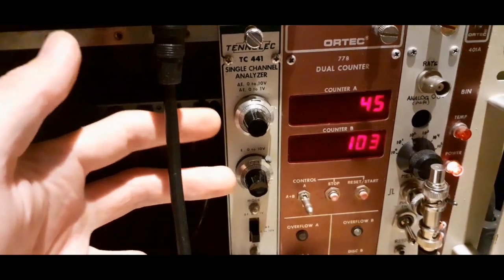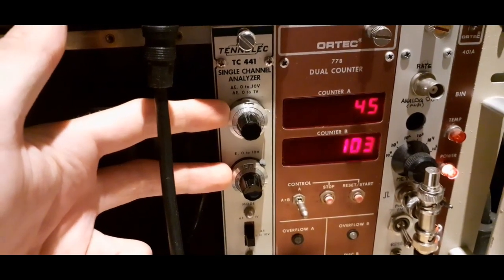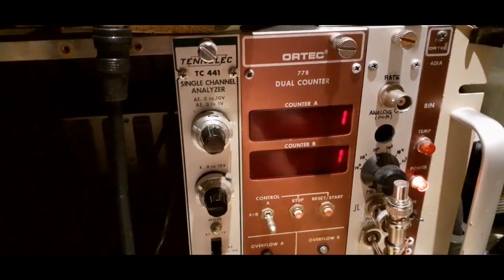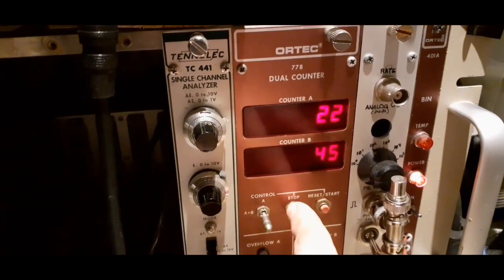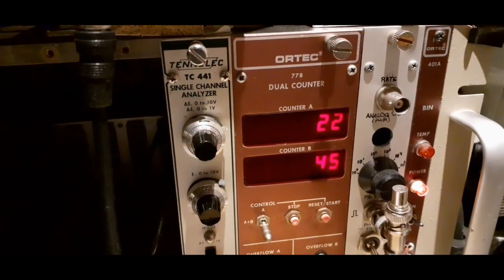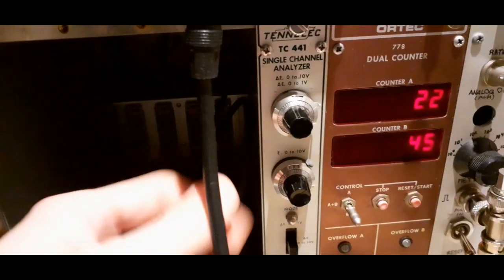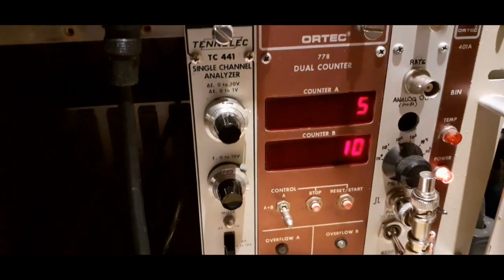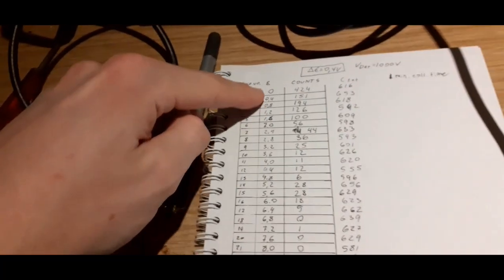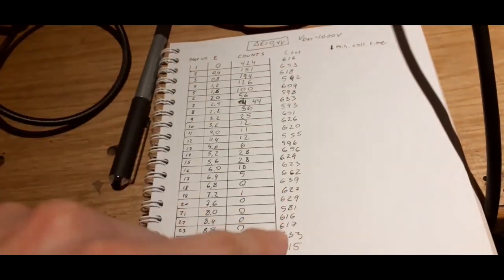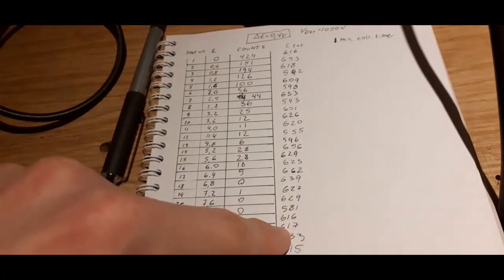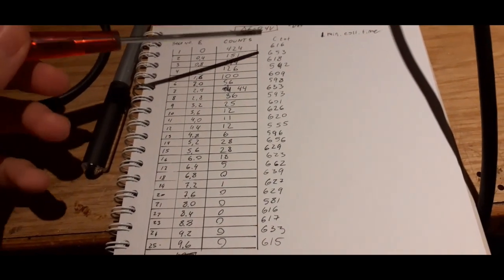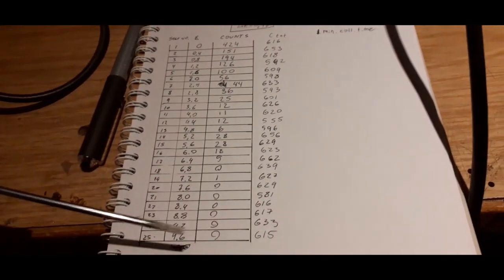We set the window at, we start at zero volts with some window, in this case 400 millivolts. We start the counter, we let it count, it's the upper counter that's the output of the single channel analyzer. Let it count for a minute, stop it, note that count, move up the window, do it again, stop it again, so on and so forth. Writing down the counts here. This is just the total counts, that's what is displayed on the lower counter. This is just total counts out from the detector to make sure that it doesn't drift and doesn't stop working at some point. We get these counts out, and we can then plot them.